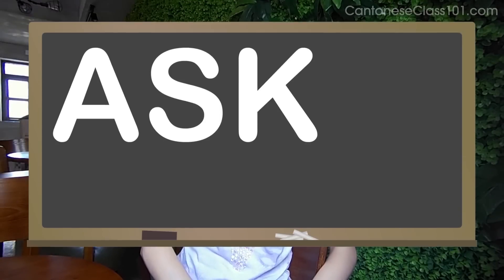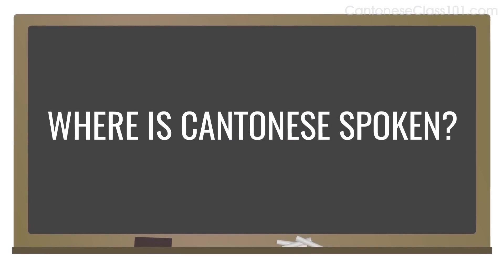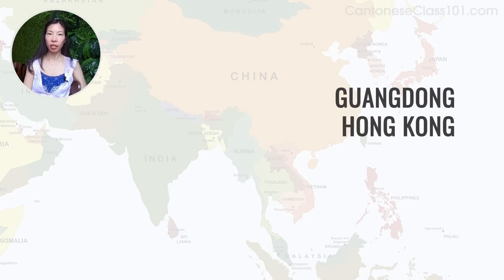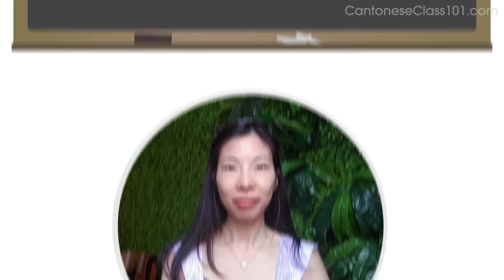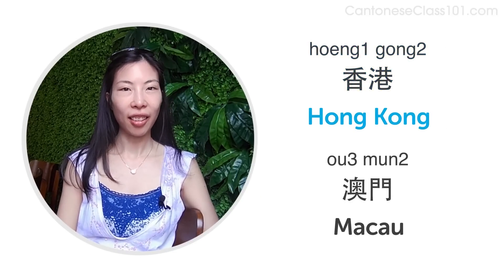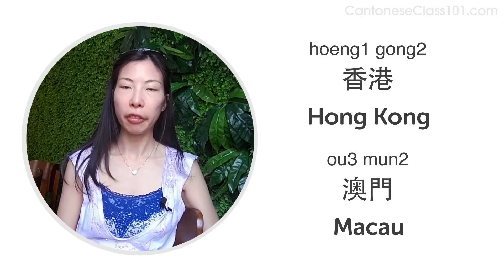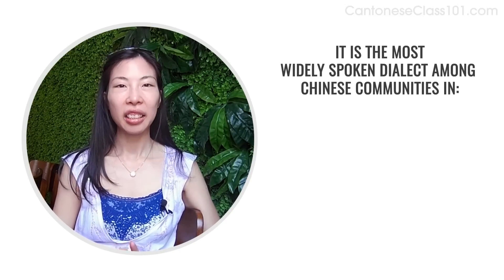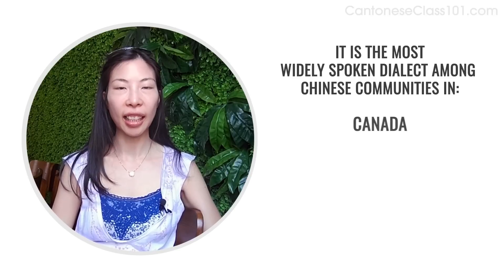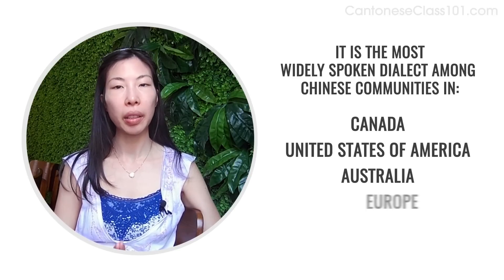Hi everybody, Olivia here. Welcome to Ask a Teacher where I'll answer some of your most common Cantonese questions. The question for this lesson is: where is Cantonese spoken? Cantonese is the oldest and most popular Chinese dialect, spoken in Guangdong, Hong Kong, Macau, and some neighbouring areas in the eastern part of Guangxi. It is the official language in 香港 (Hong Kong) and 澳門 (Macau), and historically the most popular form of Chinese spoken outside mainland China. Cantonese is the most widely spoken dialect among Chinese communities in Canada, the United States, Australia, Europe, and Southeast Asia.